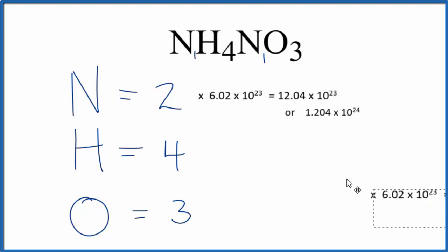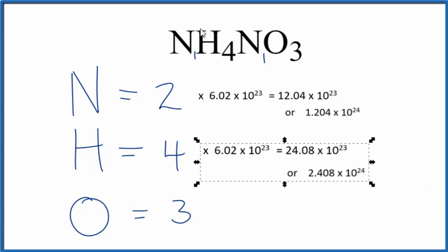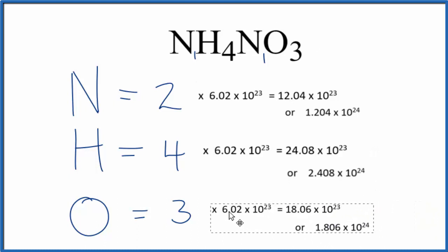For hydrogen, you'd multiply it by four to figure out how many hydrogen atoms you have in ammonium nitrate. And for oxygen, you'd multiply three times Avogadro's number to figure the number of atoms out.